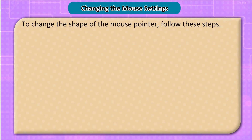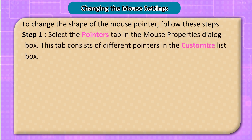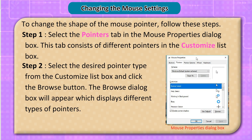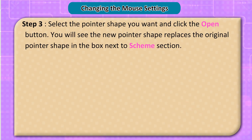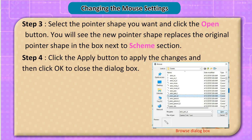To change the shape of the mouse pointer, follow these steps. Step 1: Select the Pointers tab in the Mouse Properties dialog box, which shows different pointers in the Customize List box. Step 2: Select the desired pointer type and click the Browse button. The Browse dialog box appears with different types of pointers. Step 3: Select the pointer shape you want and click Open. The new pointer shape replaces the original in the box next to the Scheme section. Step 4: Click Apply and then OK.